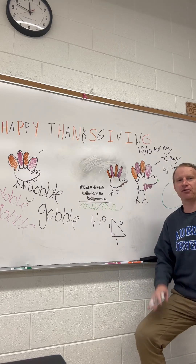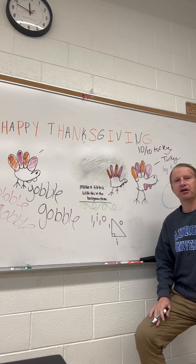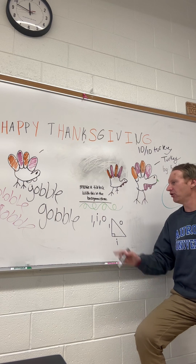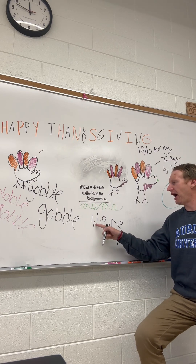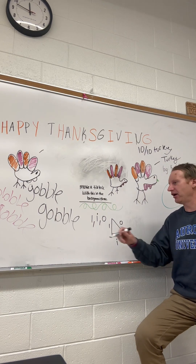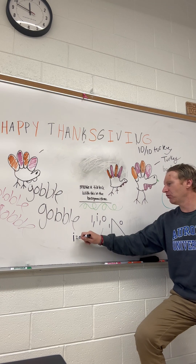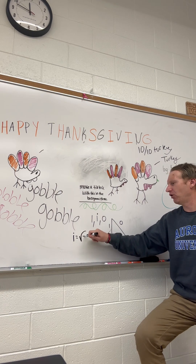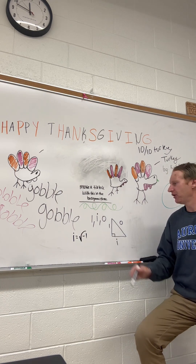Looks good. All right, so let's get to the math now. The question is: can you form a right triangle with side lengths one, i, and zero? If you're wondering what i is, i is equal to the square root of negative one — it's an imaginary number.